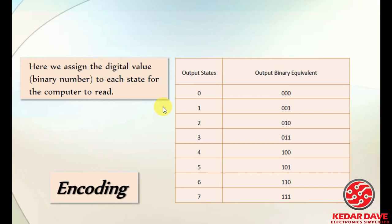The second step is encoding. If we need to represent 0, then all 3 bits are 0 — that represents state d0. The binary values are written for each state, and that is called the encoding process. This is similar to converting binary to decimal. These are the encoding steps.